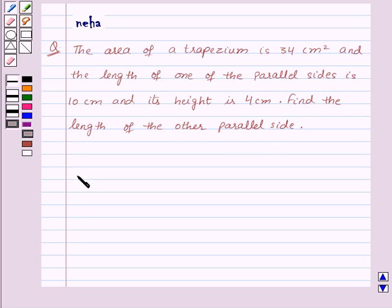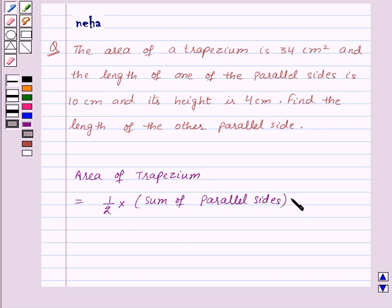Before proceeding for the solution, let's recall the area of a trapezium. Area of trapezium is equal to half times sum of parallel sides times height. This is the key idea for this question.